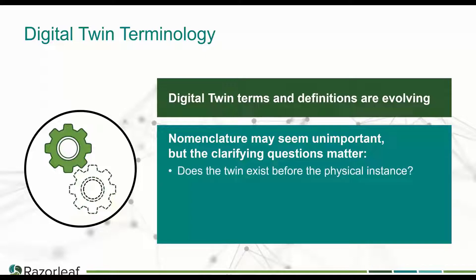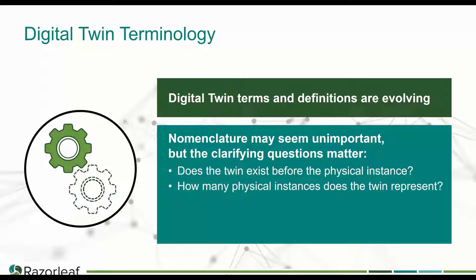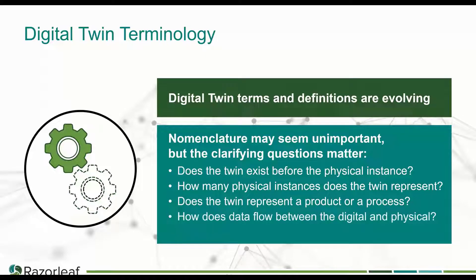For example, does the twin that you're interested in exist before you've ever made any physical instances, or does it exist after you've made one and it represents that physical instance? How many physical instances does it represent — does it represent a whole batch, all the ones made in February, or does it represent one specific physical instance? Does it represent a product or a process? How does data flow between the digital side and the physical side? Does it flow from the physical to the digital, or does it flow back from the digital world to the physical world, where the digital thing is controlling the physical thing?